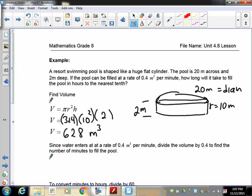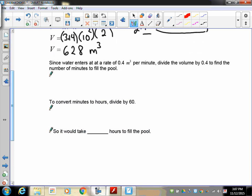So now to find out what comes next, you have to figure out how fast the water will go in. Well, if it takes one minute to put in 0.4, and 2 minutes it'll put in 0.8, we want to find out how many 0.4s will fit into 628. So we're going to take 628. We're going to divide it by 0.4.